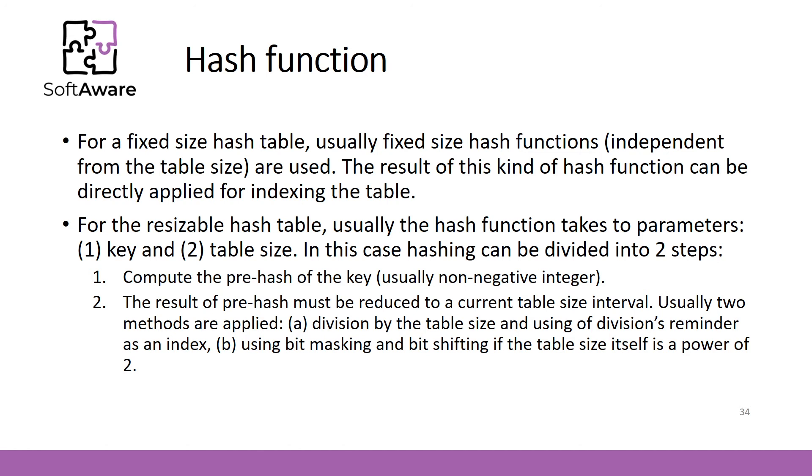As you remember, in this case hashing is separated in two steps. First, compute the prehash of the key. Second, reduce the prehash to a current table size interval. Usually two methods for this are applied. Division by the table size and using of its divisions reminder as an index. That is what we have used. Another method is to use bit masking and bit shifting if the table size itself is a power of 2.